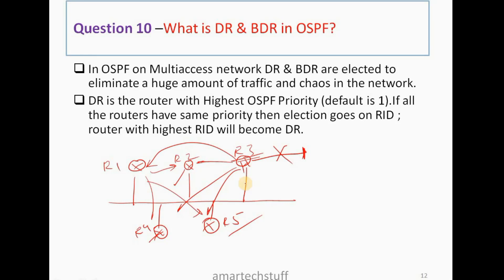Because of one single update, multiple updates are propagated in that network, resulting in a huge amount of traffic and chaos. To eliminate this, OSPF elects a DR and a BDR. The DR is the router with the highest OSPF priority — by default all routers have priority 1. If all routers have the same priority, the election is based on the router ID. The router with the highest router ID becomes the DR, and the second highest becomes the BDR.